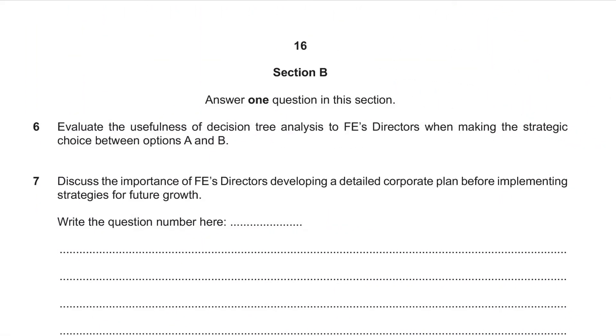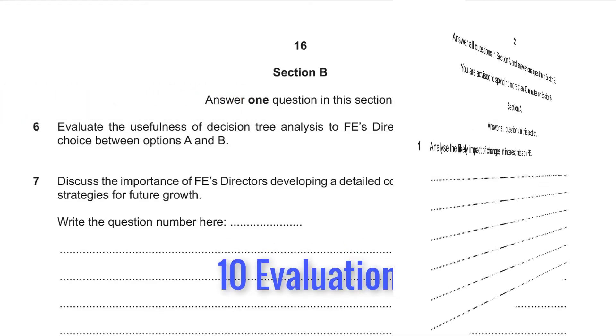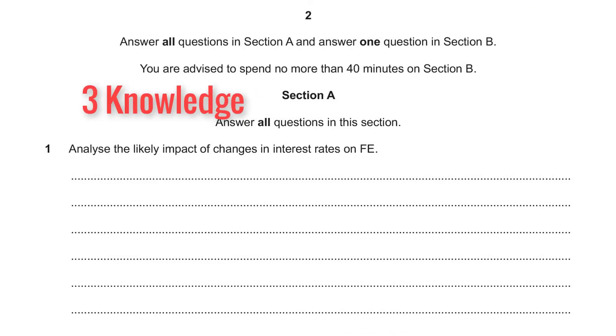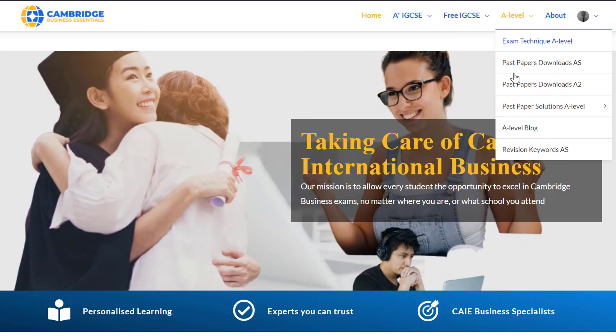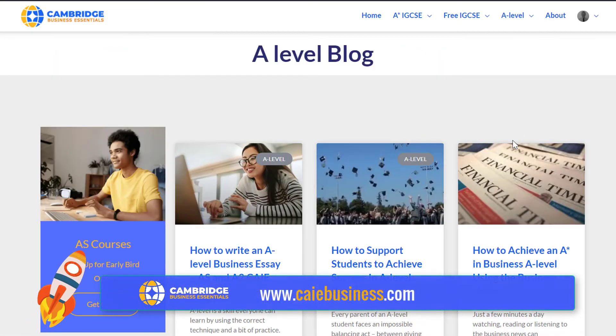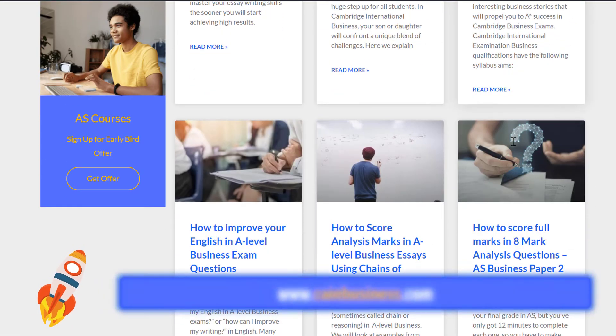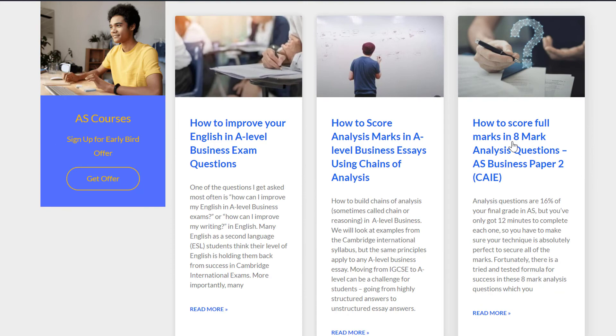Number five: get the insider information. Each essay question will have its own unique recipe for knowledge, application, analysis, and evaluation. For example, an A2 20-mark question has just three knowledge marks but ten for evaluation. But the opening ten-mark essay in Paper 3 A2 has no evaluation at all. So it's crucial that you know the exact requirements of each question so you can tailor your answer to get full marks. To confidently score full marks in each type of question, see our specialist question guides at caiebusiness.com, so you know exactly what you need to include for top marks in each question.